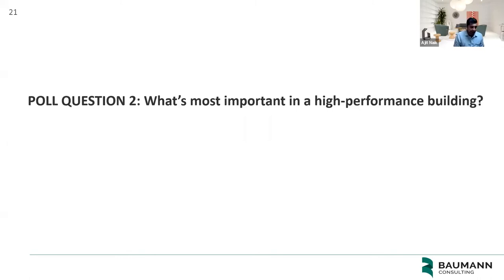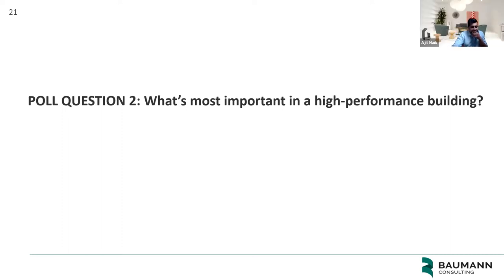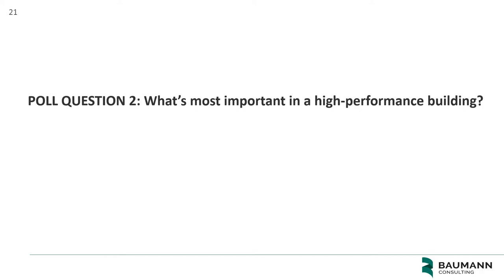Sustainability seems to be the front runner, followed by health and safety, comfort, economy, and environmental separation. I guess this shows who the group is here today. After all, we're at a webinar of the DC Sustainable Energy Utility, so I'm glad we have a focus on sustainability. Second most is health and safety, third is comfort, and I'm glad to see that economy comes a little bit later — that's unusual for a group focused on buildings.